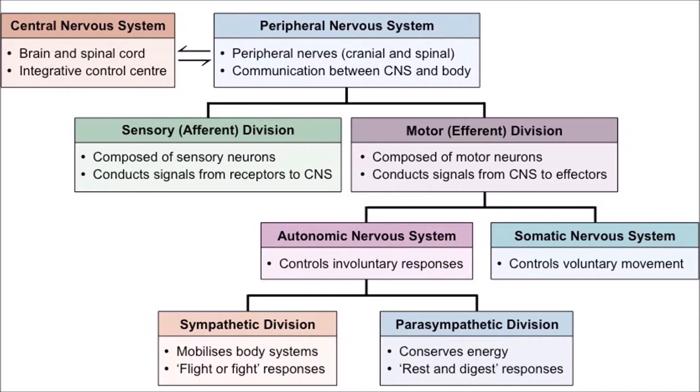If there is any damage to any part of the spinal cord or the brain, then it causes different kinds of physiological and behavioral problems. The PNS is further subdivided into the somatic nervous system or SNS and the autonomic nervous system or ANS. The figure in front of you shows nervous system divisions and their functions.